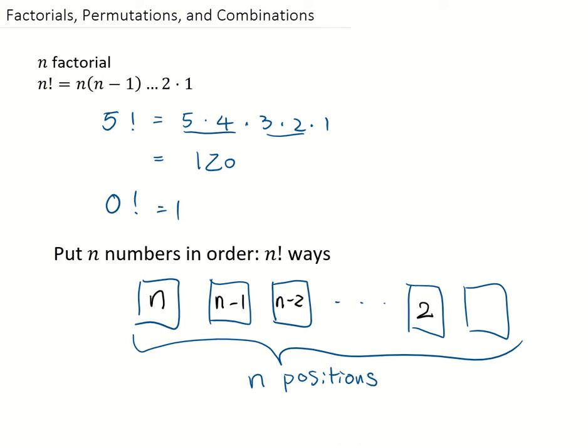And all the way until the second to the last, we have 2 choices because we have 2 positions left. And the last position, we have only 1 choice because there's only 1 left. And the number of ways to order n numbers will be the multiplication of all these numbers, which is equal to n factorial.